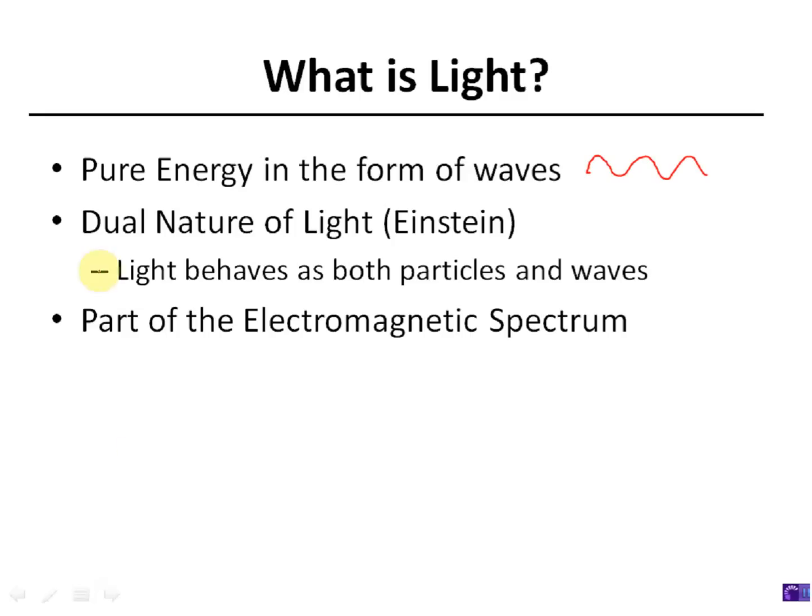Now I don't want to really worry about the second bullet here, but Einstein, he actually said that light is actually both a wave, as I have already discussed, like this, a wave. But he also said that light behaves like a particle, almost like a little tiny piece of sand or something. It acts as something that has mass. And so it's kind of called the dual nature of light. We're not going to key in on that.